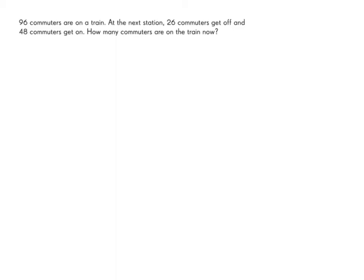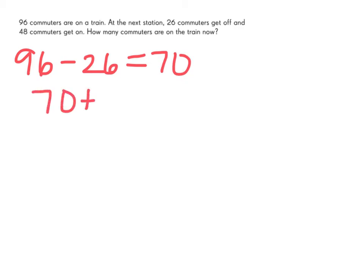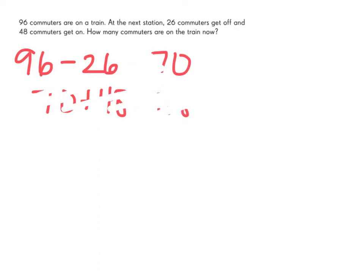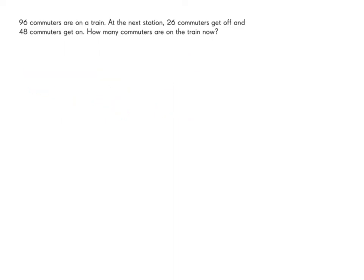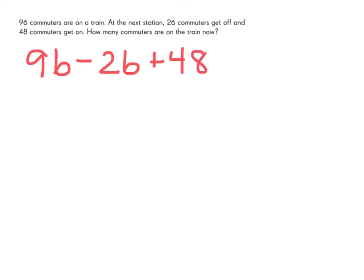You could work the problem by taking 96 minus 26 and solving for 70, then taking 70 plus 48 to solve for 118 and get your final answer. But it would be much simpler if we were able to write this as one step. We begin with our 96 commuters on the train, 26 commuters get off the train, so we'll subtract those away, and then we add our 48 commuters that get on the train.